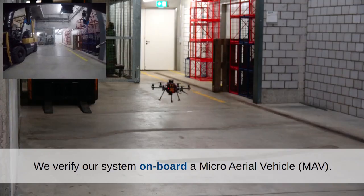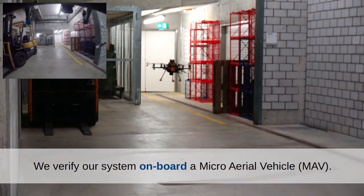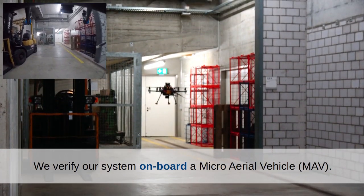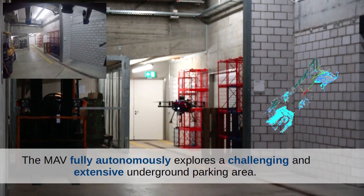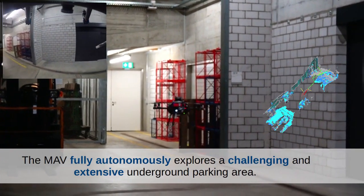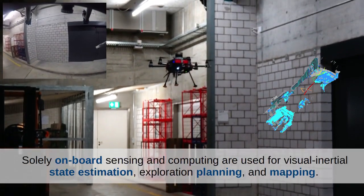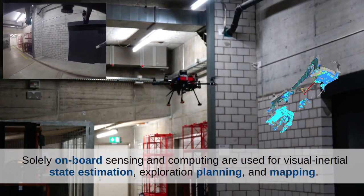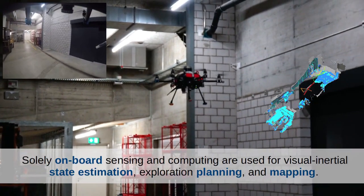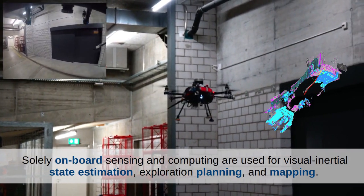We verify our system onboard a micro aerial vehicle. The MAV fully autonomously explores a challenging and extensive underground parking area. Solely onboard sensing and computing are used for visual inertial state estimation, exploration planning, and mapping.